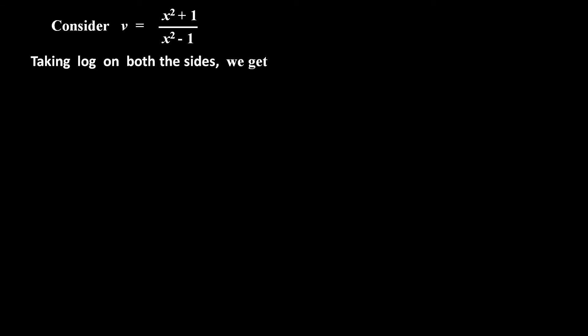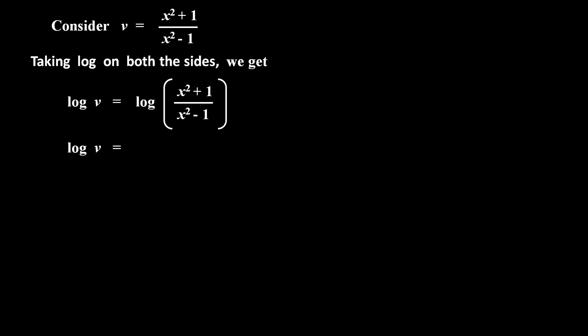Now consider the second part: v is equal to x square plus 1 upon x square minus 1. Taking log on both sides, log v equals log of (x square plus 1 upon x square minus 1). By using the log quotient rule, log v equals log of (x square plus 1) minus log of (x square minus 1).